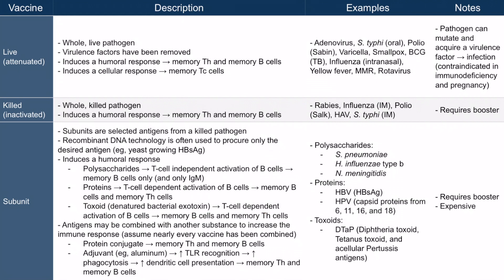Antigens — polysaccharides or proteins — may be combined with another substance to increase the immune response, and you should assume nearly every vaccine has been combined in some way. We know polysaccharides aren't that helpful alone, but if you combine them with a protein, you can induce a stronger response and get memory T helper cells. The two main substances that can be combined with the vaccine are protein conjugates and adjuvants, for example aluminum.